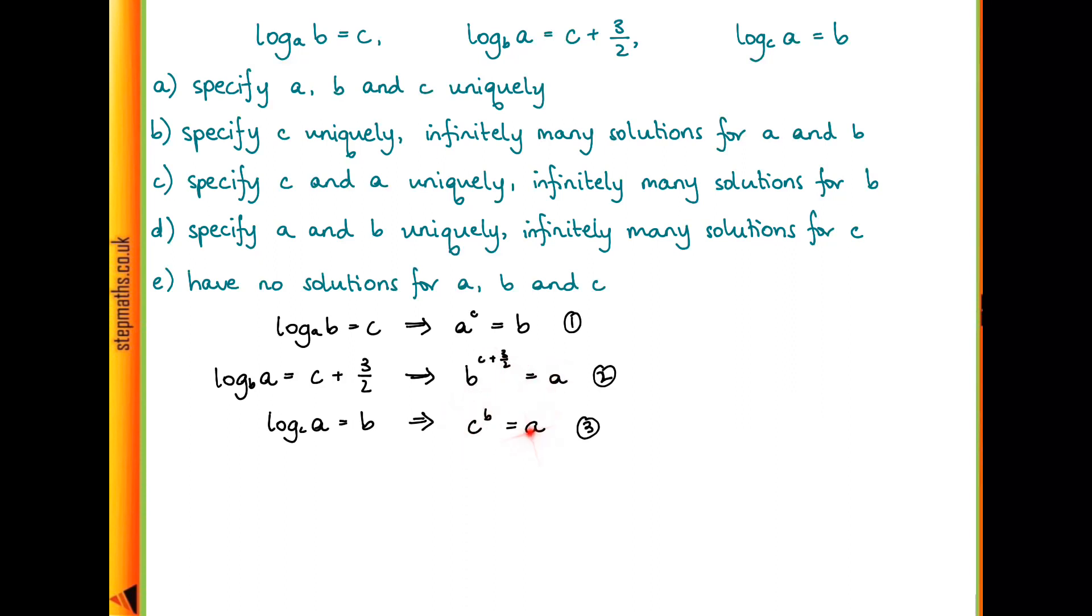It might be tempting to put these two equal to each other, but then we've got b in terms of b to the power of c and also c to the power of b, and that's quite difficult to solve. But instead, we could substitute this equation 2 into equation 1, which would give us b to the power of c plus 3 over 2 all to the c, which is this a to the c by substituting this a in here, is equal to b.